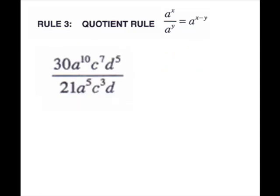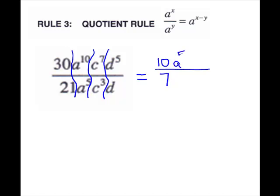We have one more example with four little problems: numbers, a's, c's, and d's. For our numbers, 21 will not go into 30, so we reduce with a common factor of 3 — 3 into 30 goes 10 times, 3 into 21 goes 7. For your a's, keep your base and subtract exponents. For the c's, keep the base and subtract. For the d's, don't forget — you have a 1 on the d in the denominator, so 5 minus 1 leaves us 4.